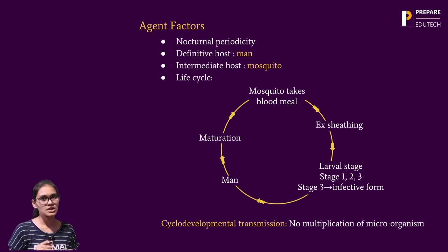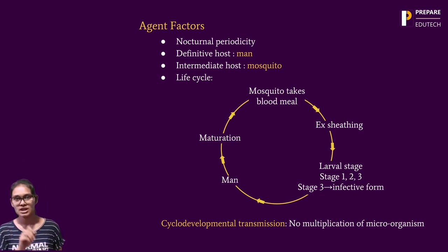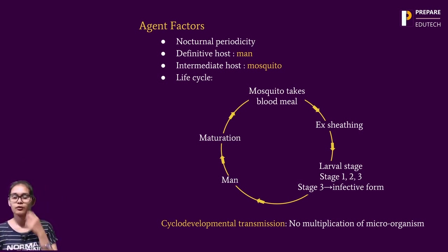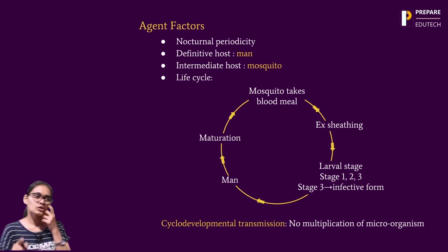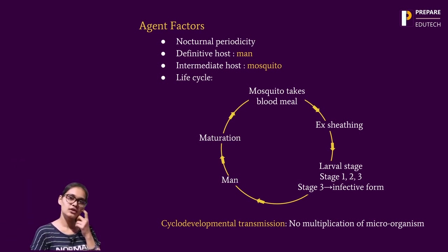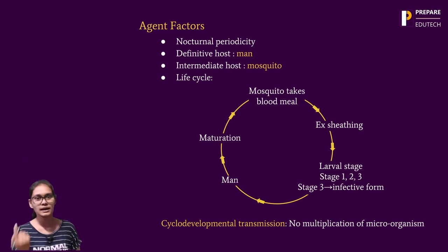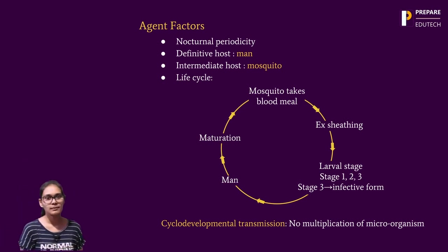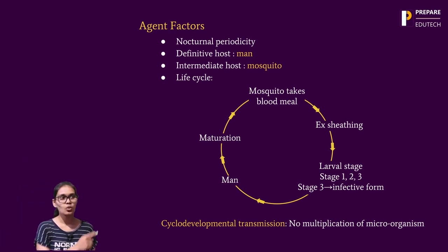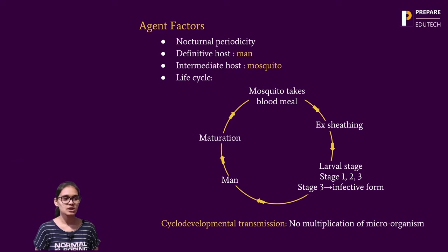There are three larval stages — stage one, two, and three. The third stage is the infective form. This infective form infects man and undergoes maturation to become the adult form, completing the developmental transmission cycle.